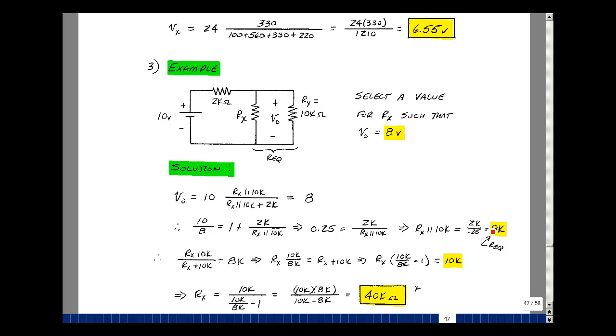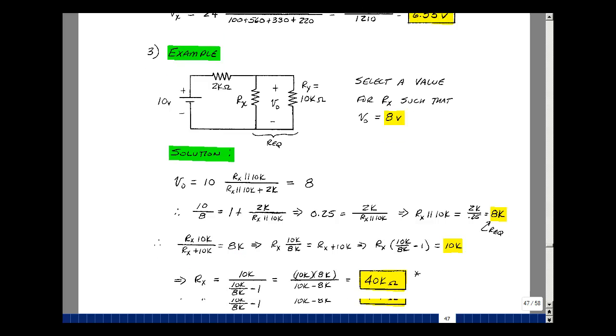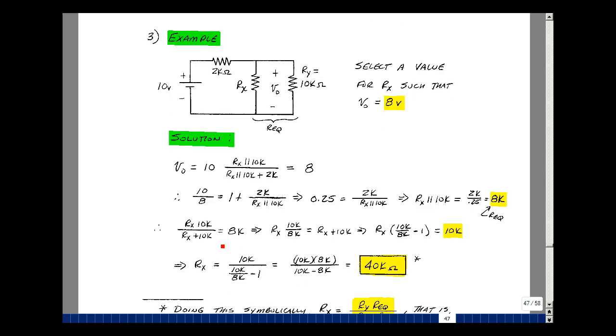Now is it possible to put something in parallel with 10k and create 8,000 ohms? The answer is yes, because the parallel combination is always smaller than the smallest of the resistances in parallel. So product over sum needs to be equal to 8,000. Divide by 8k and bring this on the other side of the equation. Divide by this, and so we get the value of Rx is 10k divided by 10k over 8k minus 1. Multiply numerator and denominator by 8k, and I get 10k minus 8k. That turns out to be 40,000 ohms.